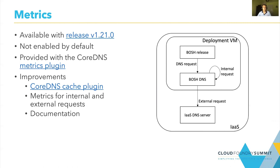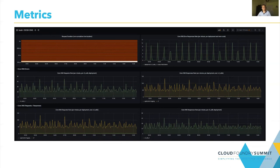Additionally, we want to introduce metrics for internal and external requests — this is BOSH DNS specific and CoreDNS doesn't have real support for this. Of course, we will also add documentation around this feature, which is not available at the moment. This is a dashboard built based on BOSH DNS metrics. You can see how helpful the information is — for example, how many requests are happening to BOSH DNS. We were surprised to see how many requests BOSH DNS is handling. You can also see how many requests are failing or how long they are taking. I really recommend you to look into this feature.